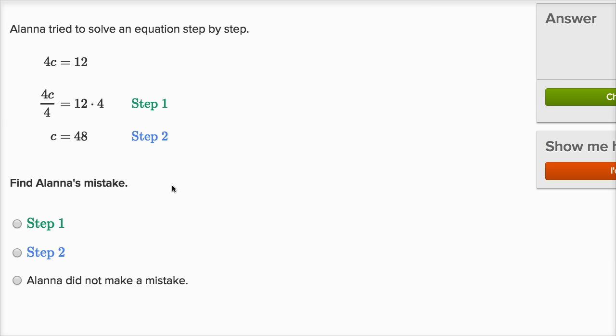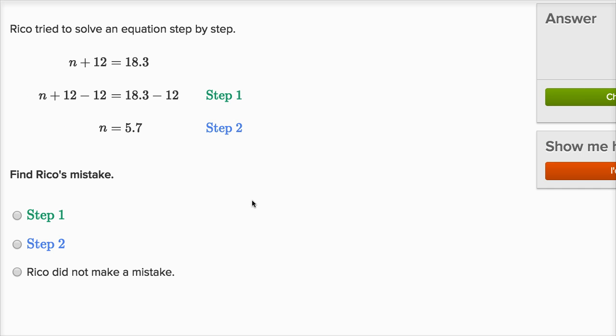Let me see if I can find one where there's not a mistake in step one. All right, Alana tried to solve an equation step by step. 4c equals 12, divides the left-hand side by four, and then multiplies the right-hand side by four. No, if you're going to divide the left-hand side by four, you have to divide the right-hand side by four as well. You don't multiply by four, so a mistake in step one. Let's do one more of these.